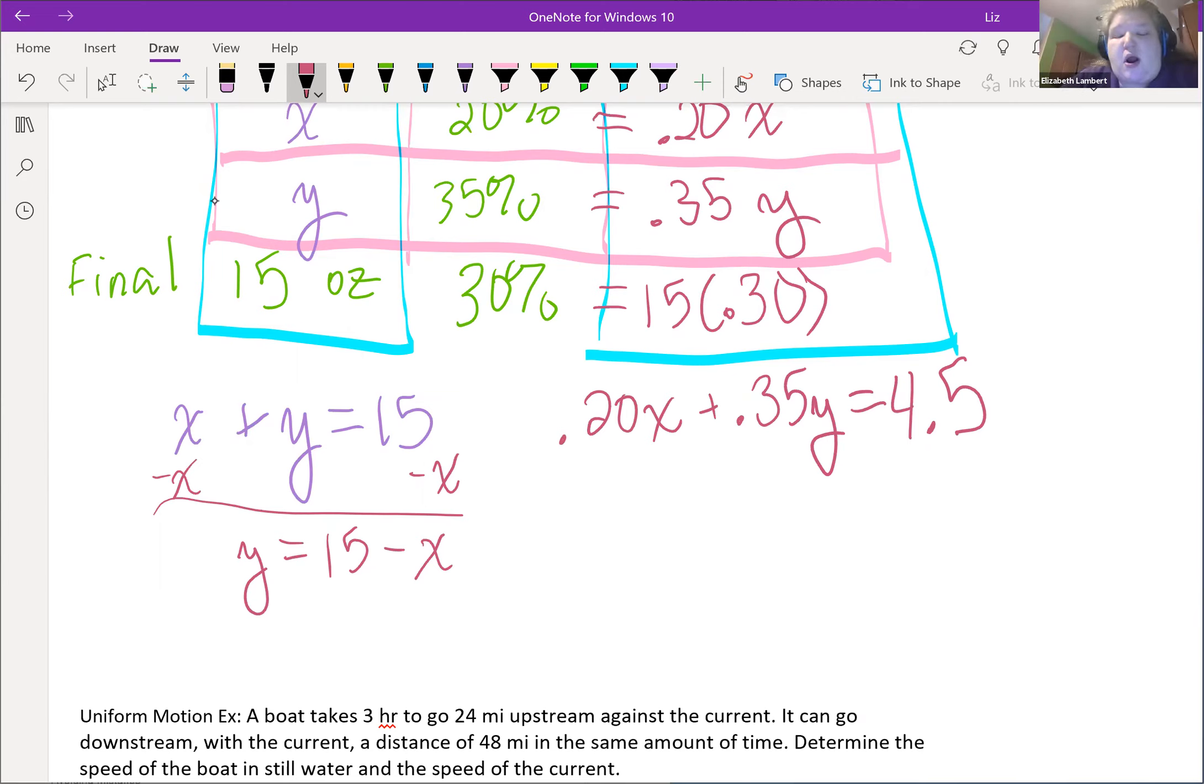So with decimals like this, it's probably the way I'd go, but I'm a glutton for punishment. So we will work it out. 0.20x plus 0.35 times 15 minus x equals 4.5. 0.20x plus... yes, I could think really really hard and figure that out, I don't want to. So 0.35 times 15 is 5.25 minus 0.35x equals 4.5.